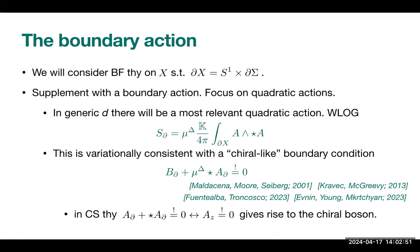Putting the theory on a manifold whose boundary takes the form of a thermal circle times another manifold, requiring boundary conditions made variationally well-posed with a boundary action. For quadratic boundary actions with a length scale in generic spacetime dimensions, the most relevant term is A ∧ *A. This is variationally consistent with a chiral-like boundary condition relating B to the Hodge star of A on the boundary. This generalizes the Chern-Simons boundary condition Az=0 — which gives rise to the chiral boson — to act on P-forms and D-minus-P-minus-1 forms.